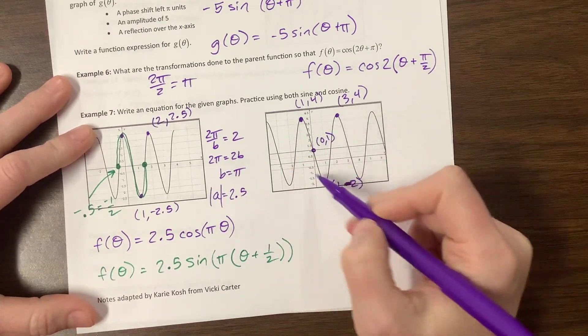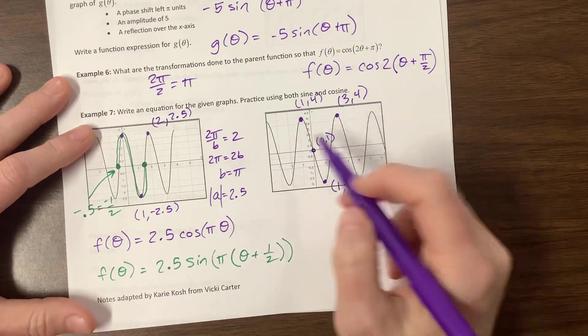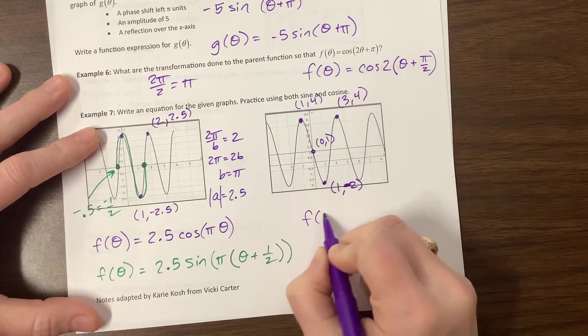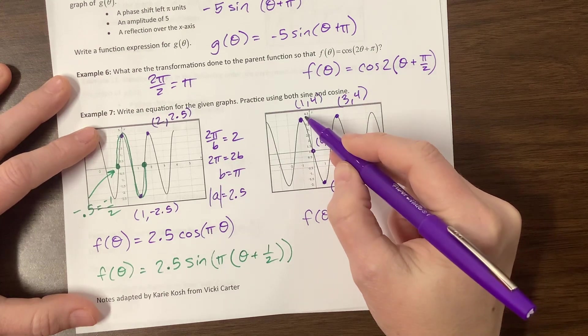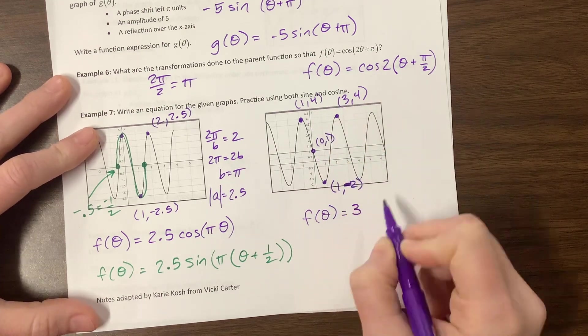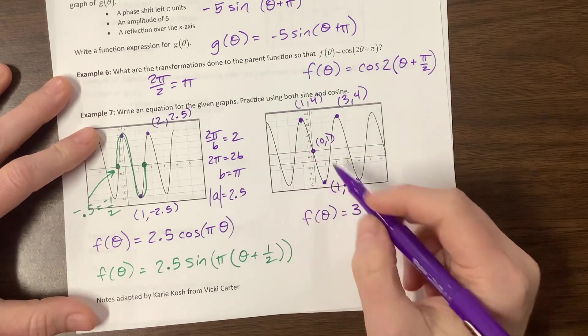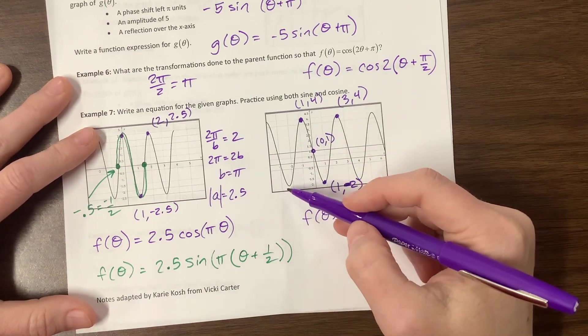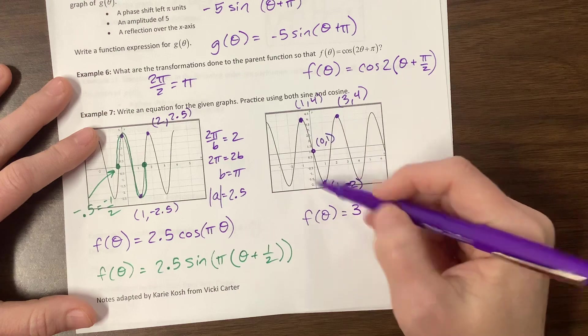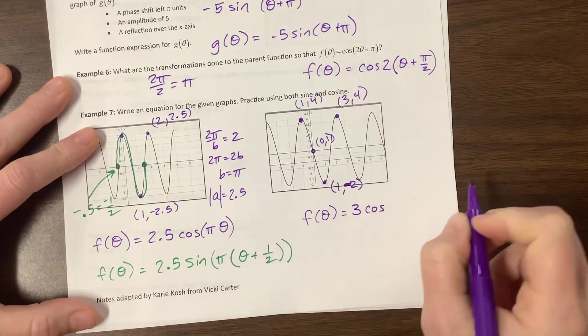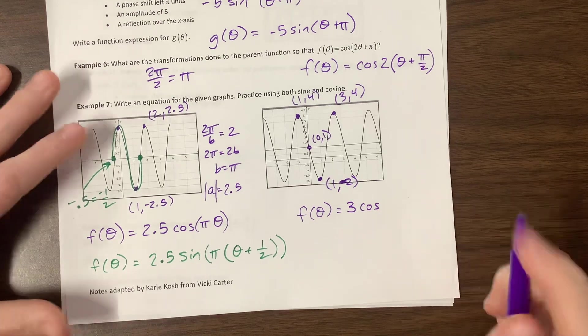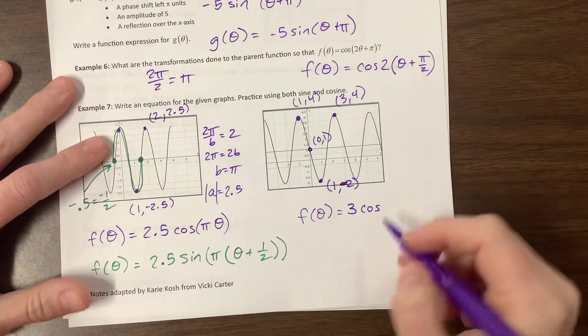So we can use that and say f of theta is equal to our amplitude. We go from 1 up to 4, so that amplitude is 3. We're starting at the top, so we don't need to, if we started at the bottom, we'd need to make it negative, and then go something like that, because we would have reflected it. 3, I think I have other videos on how to write the equation. I'll try and find them and link them.